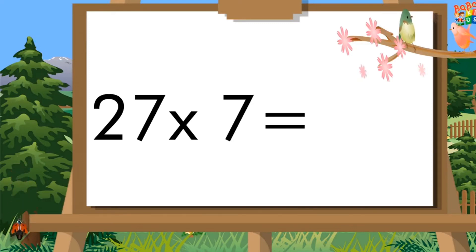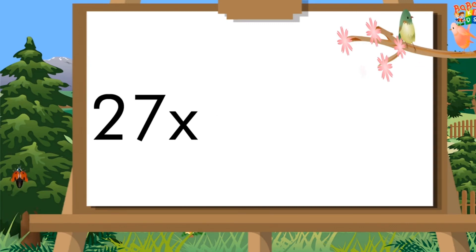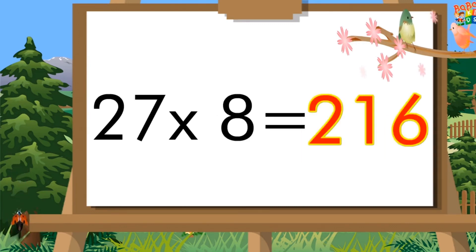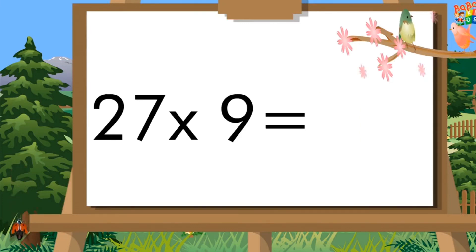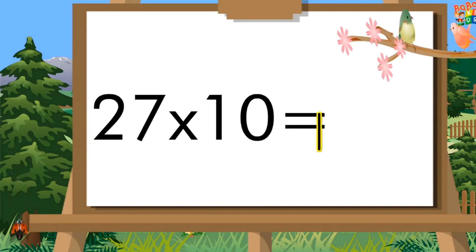27 times 7 is 189. 27 times 8 is 216. 27 times 9 is 243. 27 times 10 is 270.